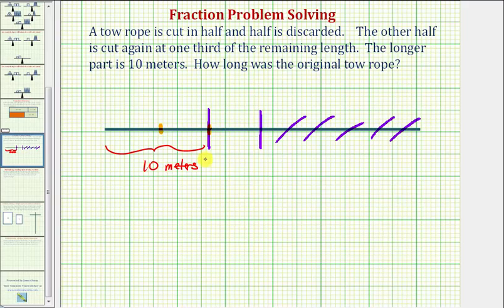But notice how this would be one third of the original length, and therefore this length would be 10 meters, and this length would also be 10 meters. So now we know the original length was 30 meters.